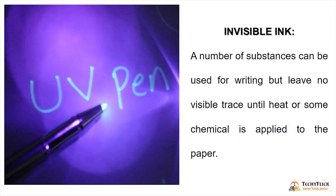Invisible ink. A number of substances can be used for writing but leave no visible trace until heat or some chemical is applied to the paper. For example, lemon juice revealed by candlelight — that is a basic invisible ink. There is also a UV pen, which is used in schools; you write on the back side and reveal it under UV light.